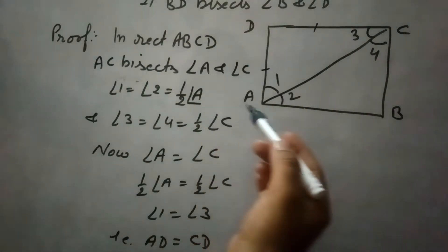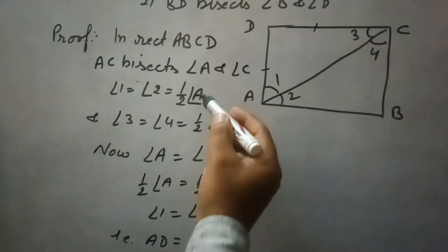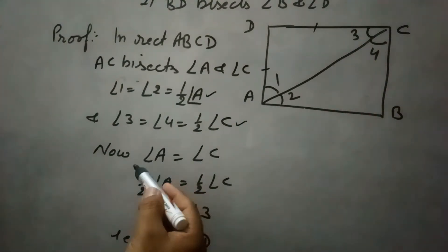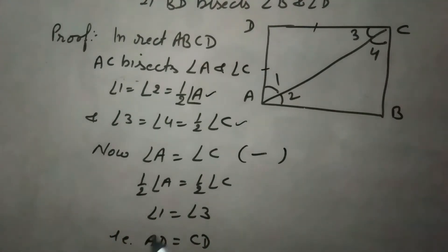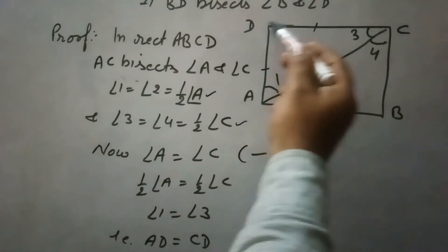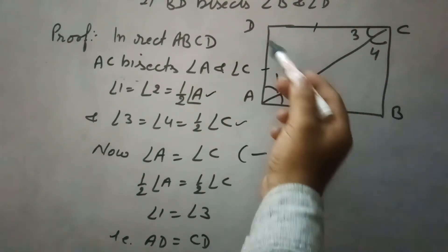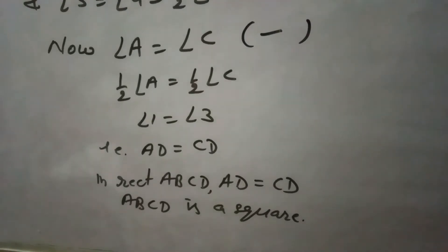In this rectangle, because AC bisects angle A and angle C, angle 1 equals angle 2 equals half of angle A, and angle 3 equals angle 4 equals half of angle C. Since angle A equals angle C, half of angle A equals half of angle C, so angle 1 equals angle 3. In the triangle, the sides opposite these equal angles are equal, so AD equals CD. Therefore, in rectangle ABCD, since AD equals CD, ABCD is a square.